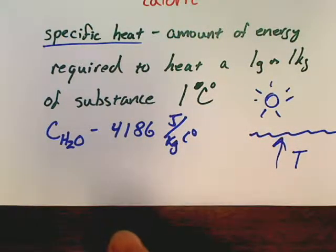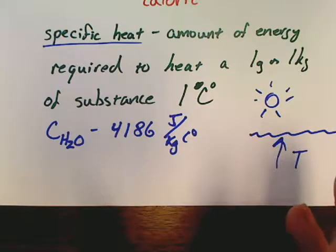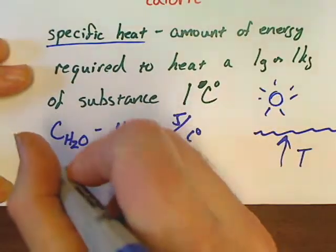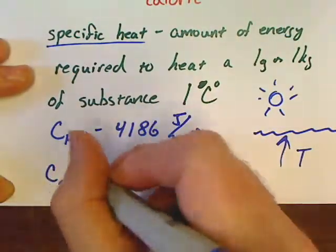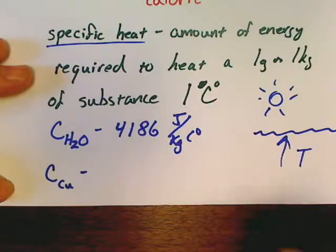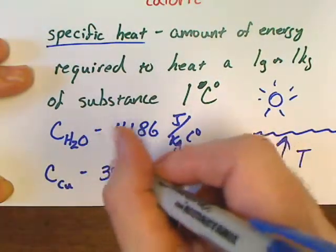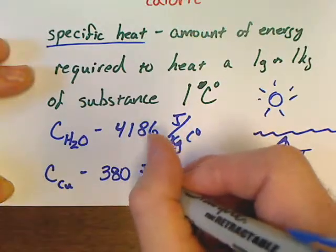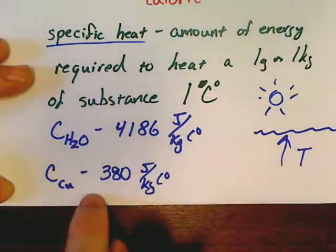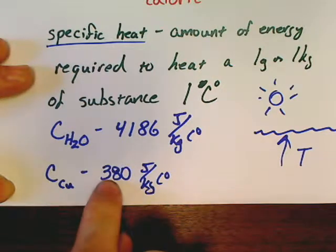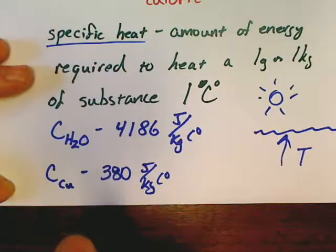What about a piece of metal? If you've ever left a piece of metal out in the sun, you notice it gets hot in a hurry. Copper, for example, is 380 joules per kilogram Celsius degree. By comparison, it is very, very easy to heat up a piece of copper. Most metals are all pretty low.